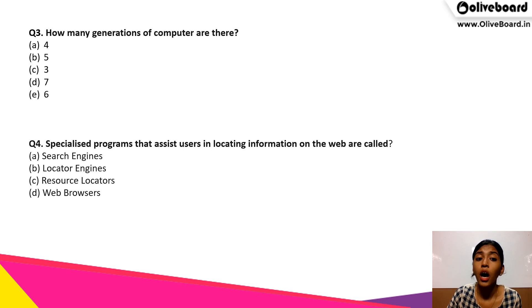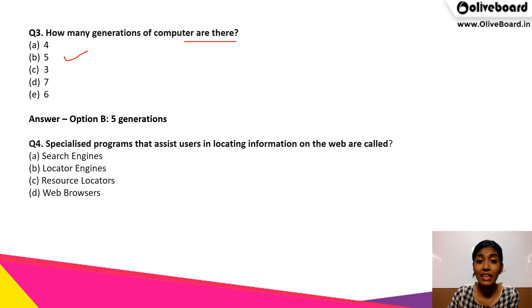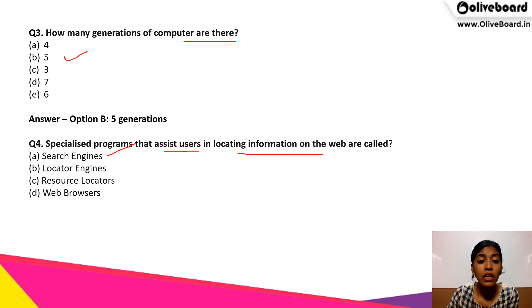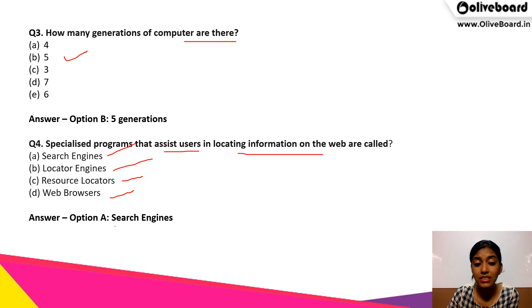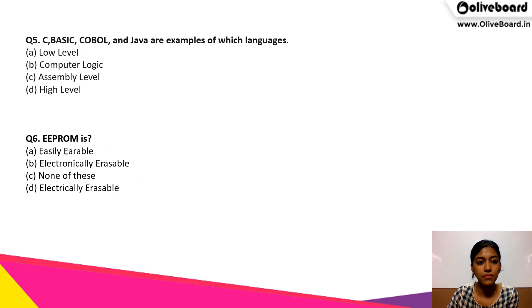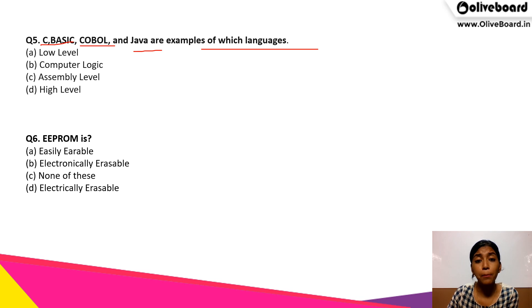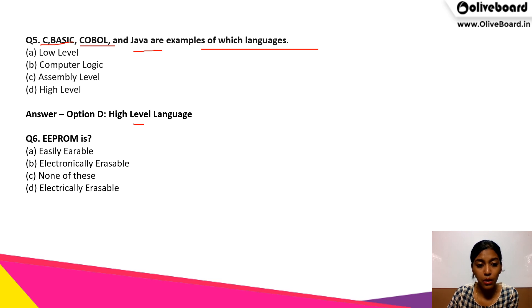Third question: how many generations of computer are there? We just read about the generations, so the correct answer is B — five generations. Next question: specialized programs that assist users in locating information on the web are called — search engines, second locator engines, resource locators or web browsers? The correct answer is A, search engines. Next question: C, Basic, COBOL, Java, etc. are examples of which language — low level, computer logic, assembly level or high level? The correct answer is high level language, option D.